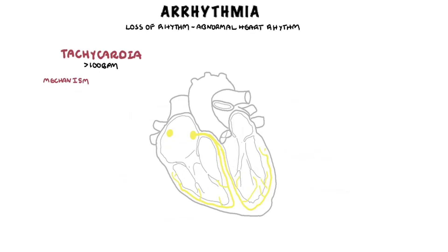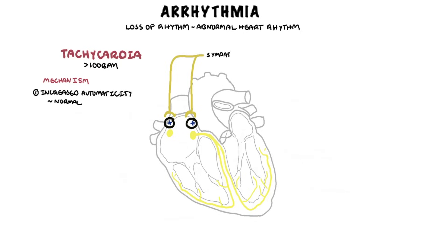The first mechanism is enhanced automaticity. Normal increase in automaticity occurs when someone exercises or is anxious, causing sympathetic stimulation to the sinoatrial and atrioventricular nodes, which will increase the heart rate. Abnormal increase in automaticity occurs when there is ectopic firing of pacemaker cells elsewhere in the atrium or ventricles. For example, ectopic depolarization of atrial pacemaker cells will send impulses to the atrioventricular node rapidly, which is seen in atrial fibrillation.